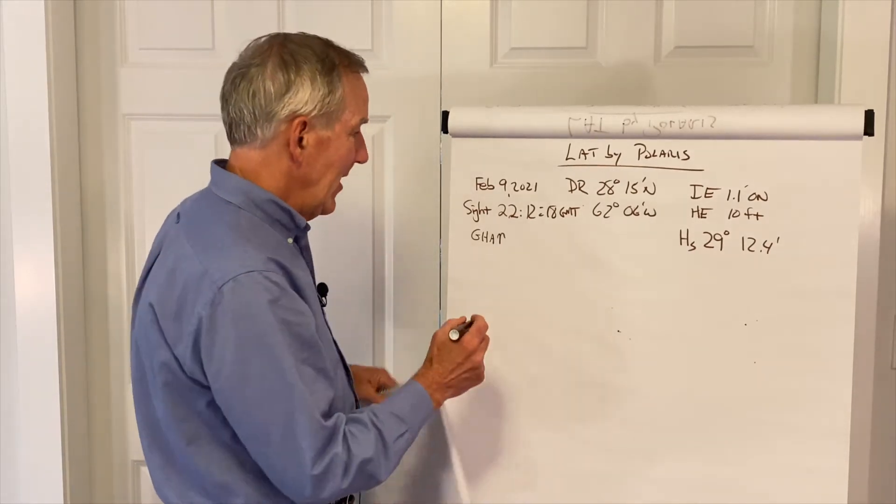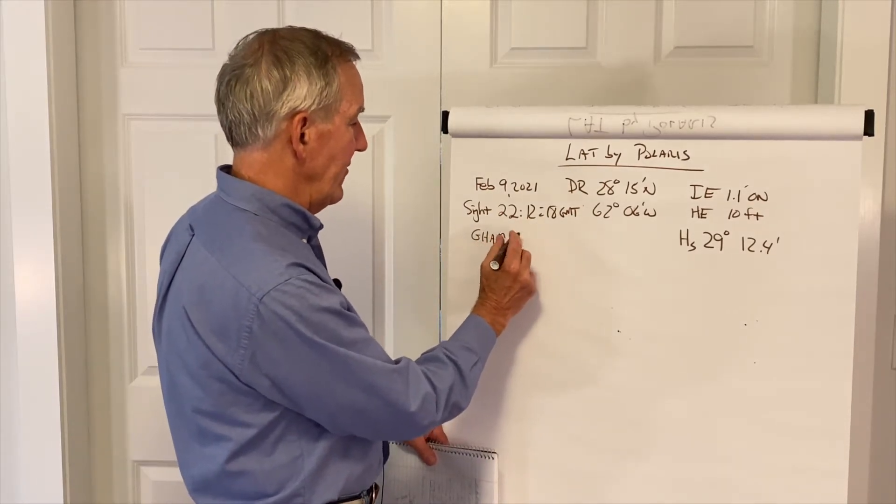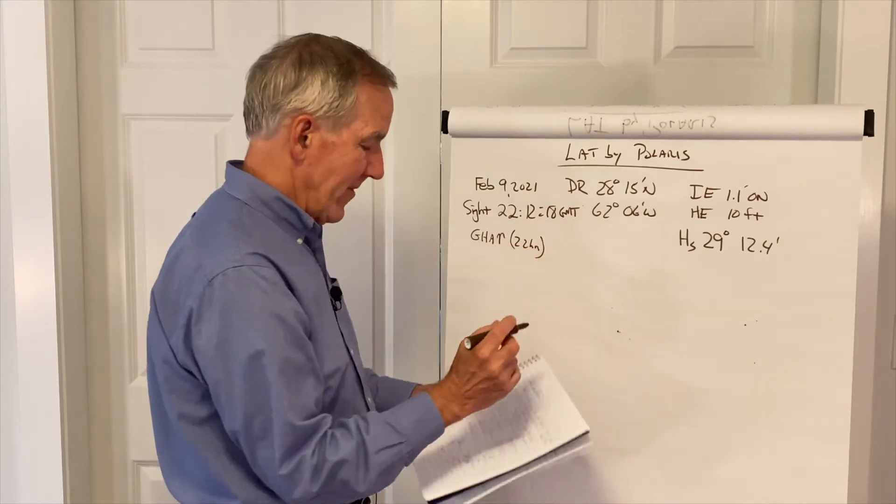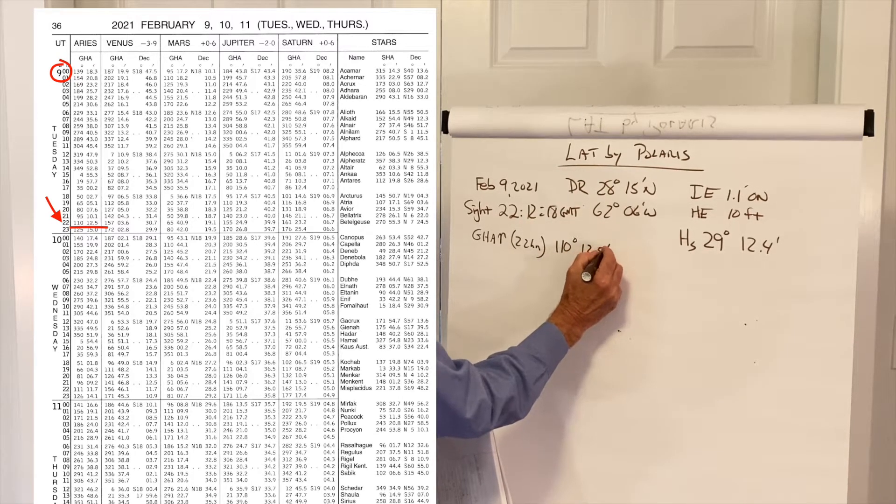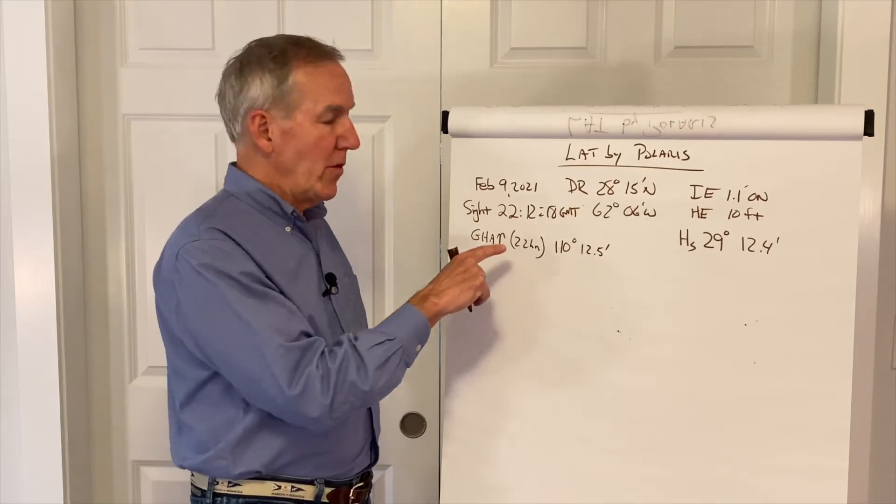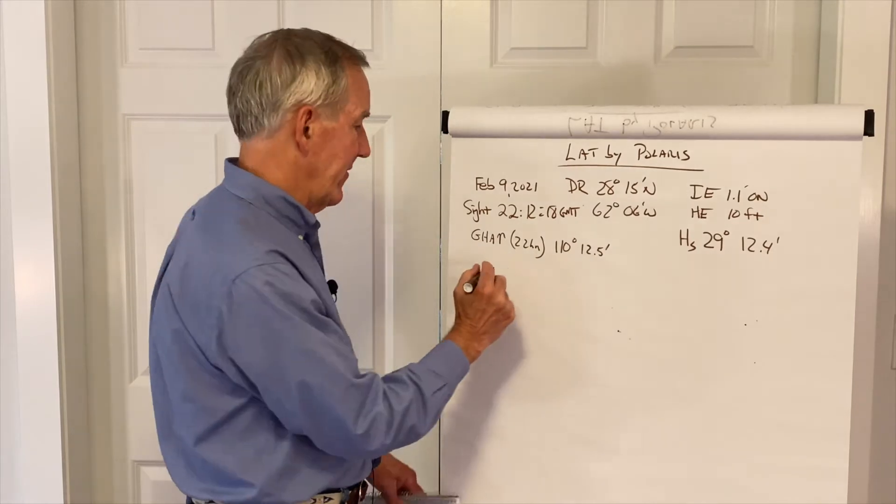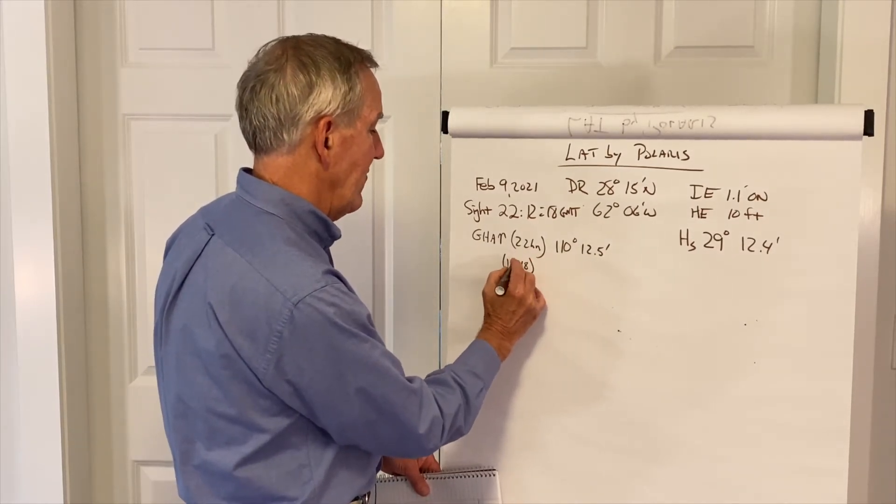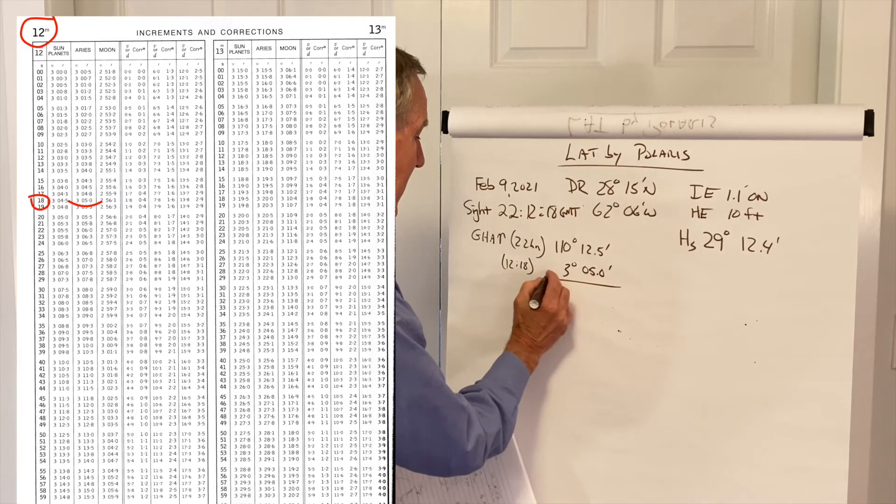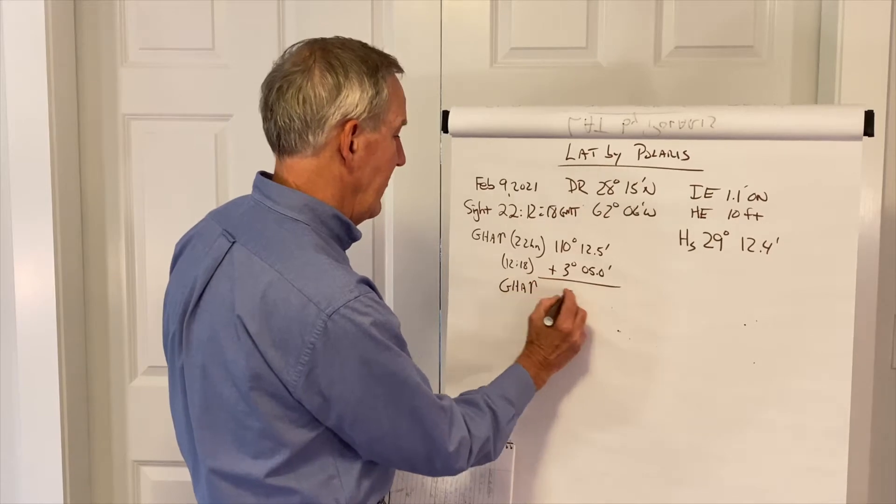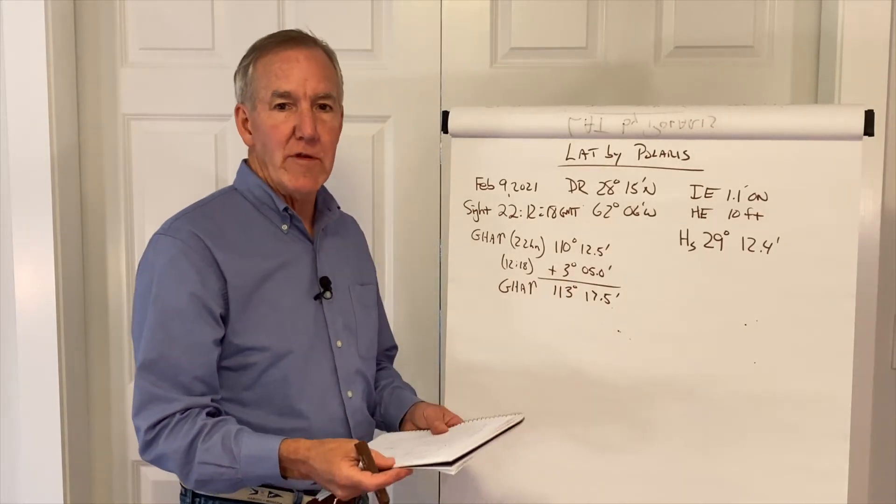So the first thing we do is we go to the February 9th box, and on the left-hand page, we go to the GHA, the Aries column for 22 hours. We find that that value is 110, 12.5. Next, we go to the increments and corrections pages in the back for 12 minutes and 18 seconds to find the GHA of Aries value for that amount of time, which is 3 degrees, 5 minutes. Add those together to get our total GHA of Aries, and we have 113 degrees, 17.5 minutes.